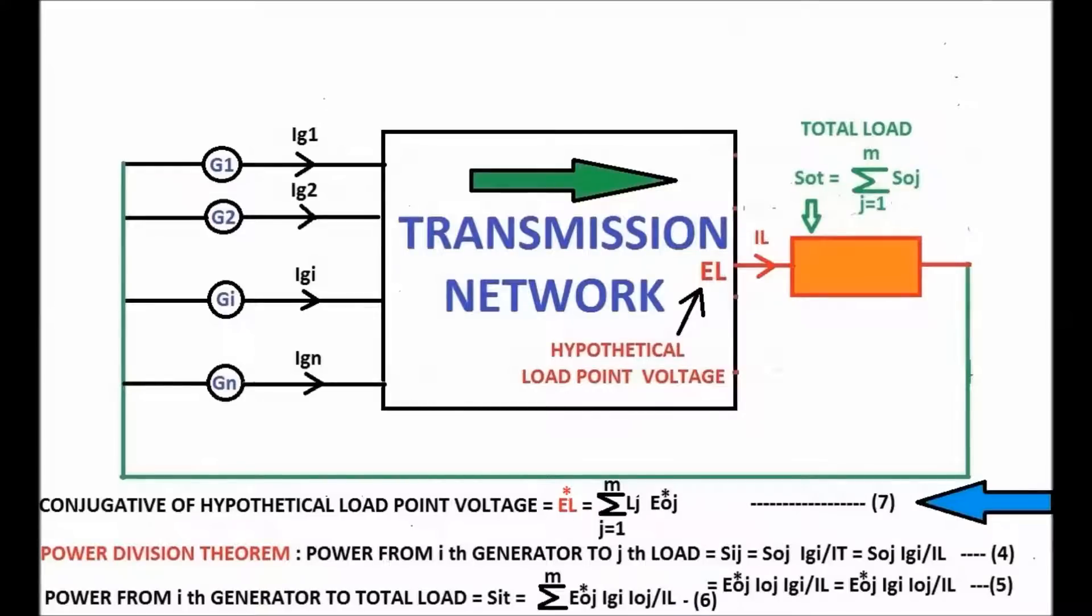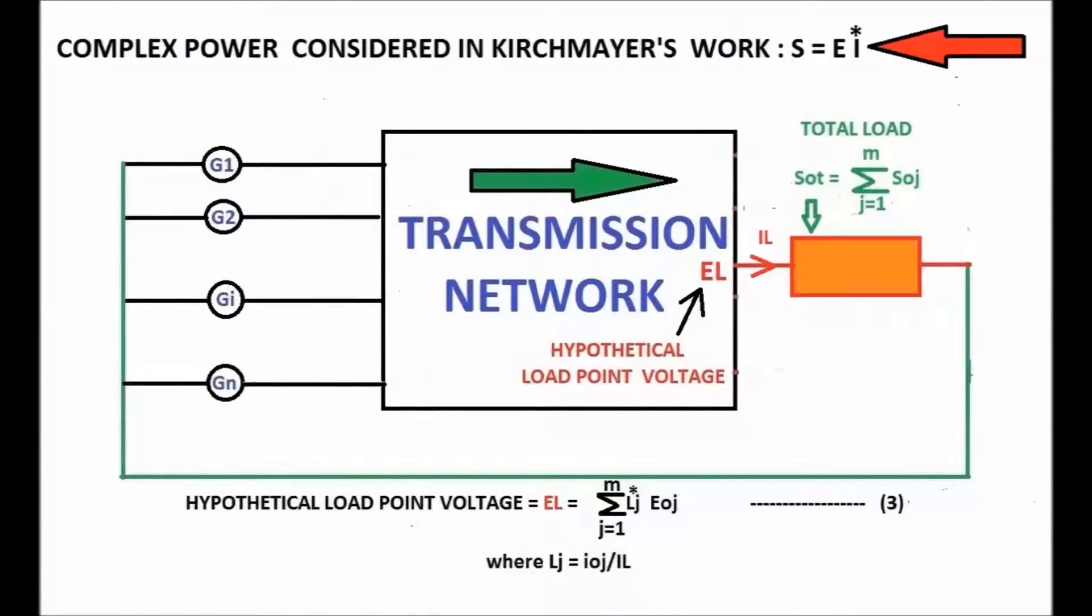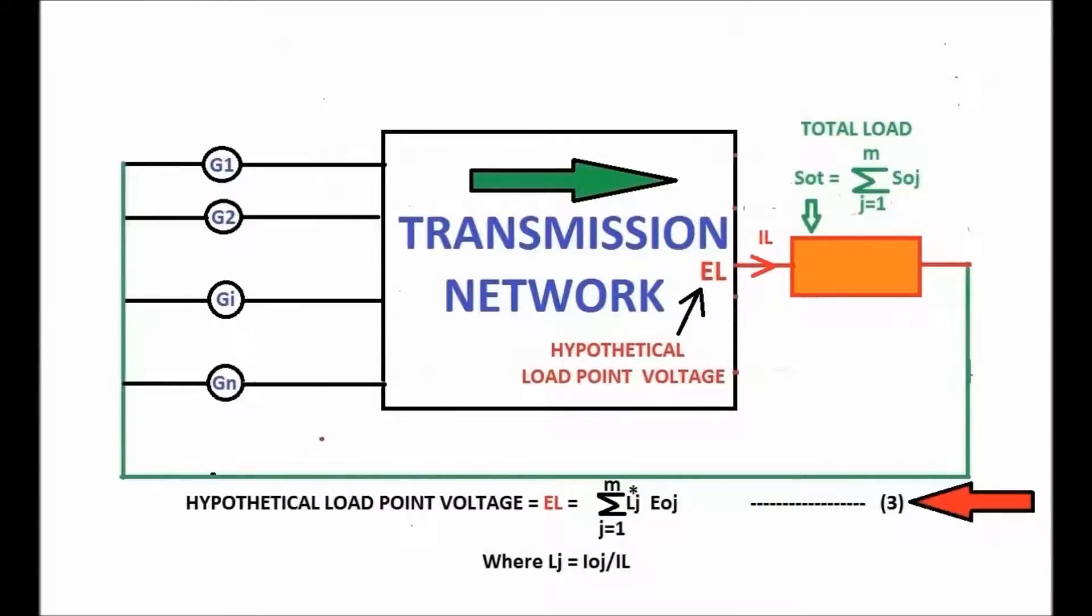Whereas in Kirchmeyer's work, the complex power is considered as EI conjugate, giving the voltage as shown in Equation 3.